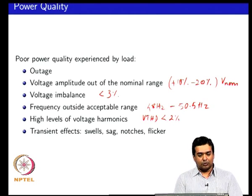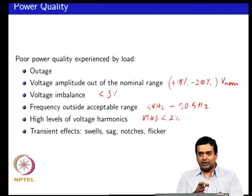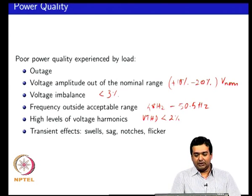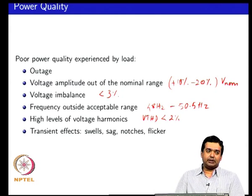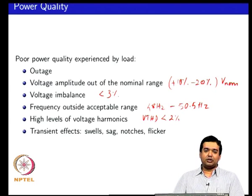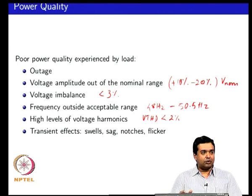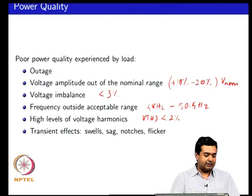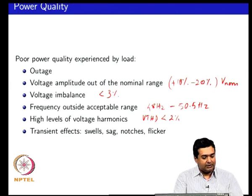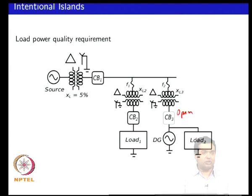You can have transient effects which also affect power quality — a short-term increase in voltage amplitude or a short-duration voltage dip, which is called a sag or a swell. You might have notches in the waveforms if you have thyristor power converters connected to your point of common coupling. You can have flicker in your load if someone is operating an electric arc welder on the same street. For many of these power quality reasons, you might want to intentionally disconnect from the grid and feed your local load from a DG.